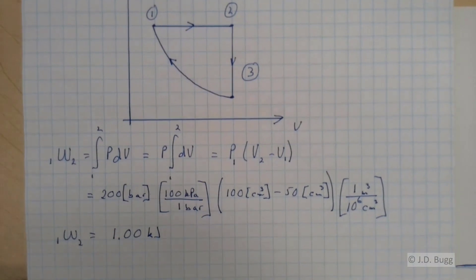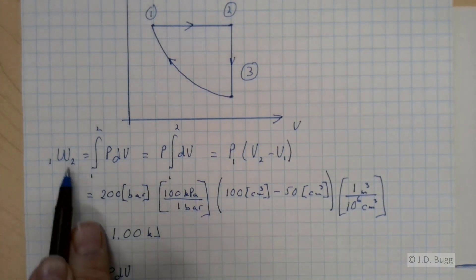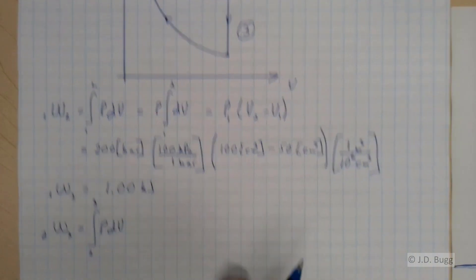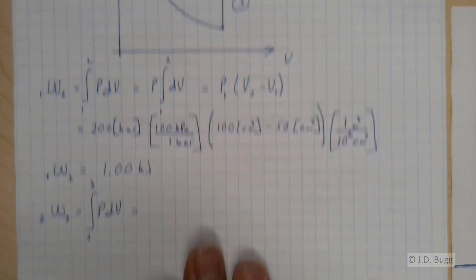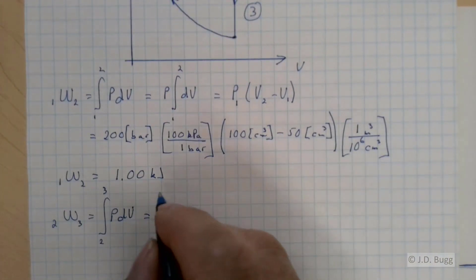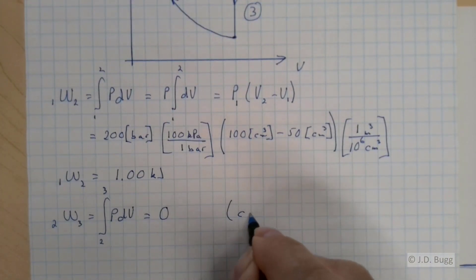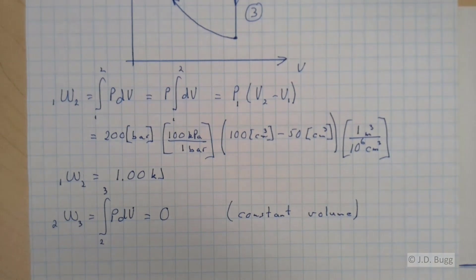So now we can move on to the second process. The work from 2 to 3 is the integral from 2 to 3 of PDV. This is always our starting point for work calculation. Work is integral PDV. But in this case, 2 to 3 is a vertical line, constant volume process. So this is zero because this is constant volume.